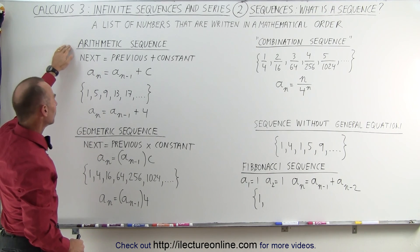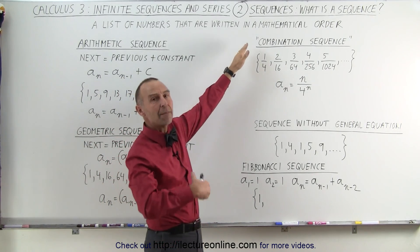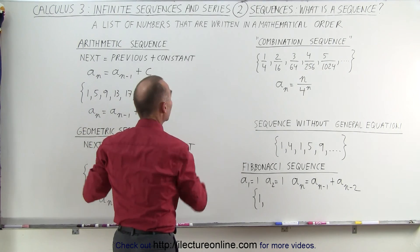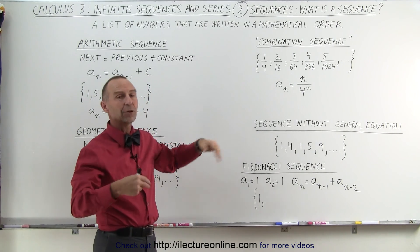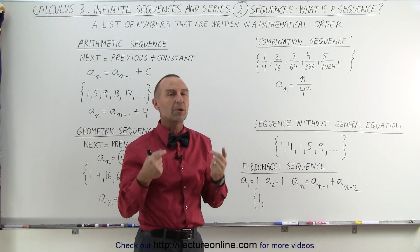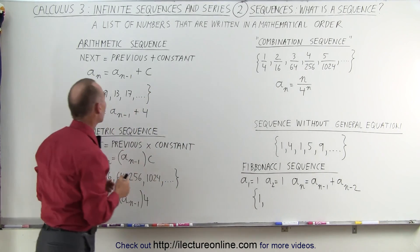There are what we call arithmetic sequences, geometric sequences, something I'll call combination sequences where there may be a combination of arithmetic and geometric order in the series. Then there's sequences that don't have any particular general equation you can assign to it, but there is a certain mathematical order. So let's go ahead and explore what these are.